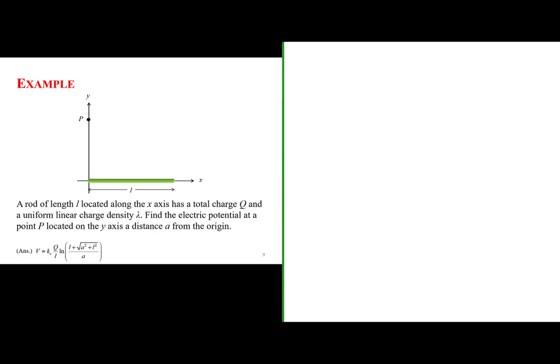A rod of length L located along the x-axis has a total charge Q and a uniform linear charge density lambda. Find the electric potential at a point P located on the y-axis, a distance A from the origin.